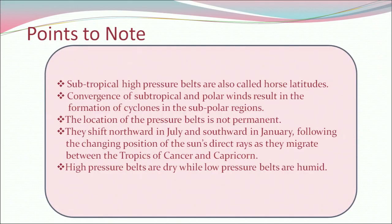Important points to remember: subtropical high pressure belts are called horse latitudes. Convergence of subtropical and polar winds results in the formation of cyclones in the subpolar regions. The location of the pressure belts is not permanent — they shift northward in July and southward in January, following the changing position of the sun's direct rays as they migrate between the Tropics of Cancer and Capricorn. High pressure belts are dry while low pressure belts are humid.